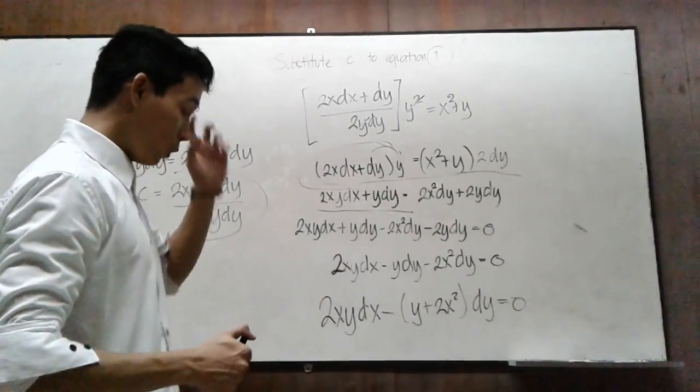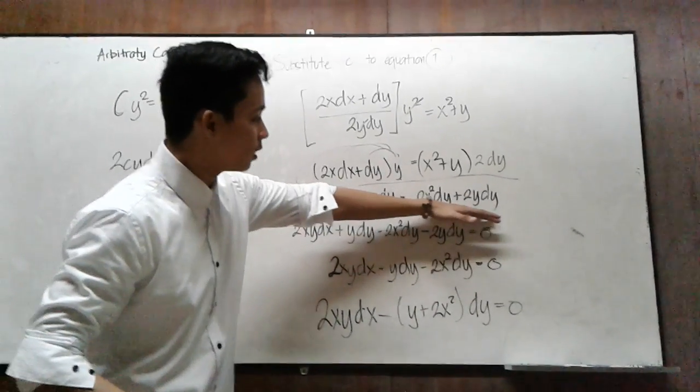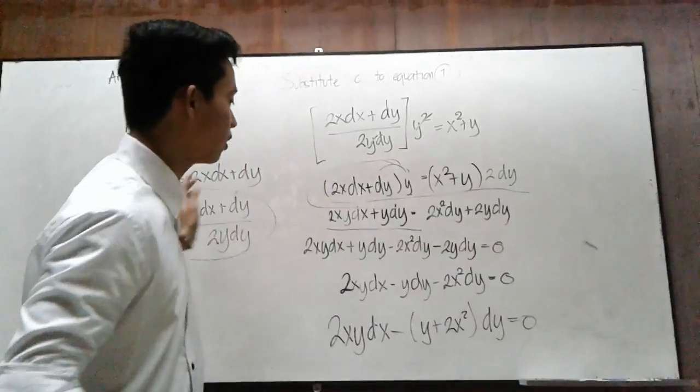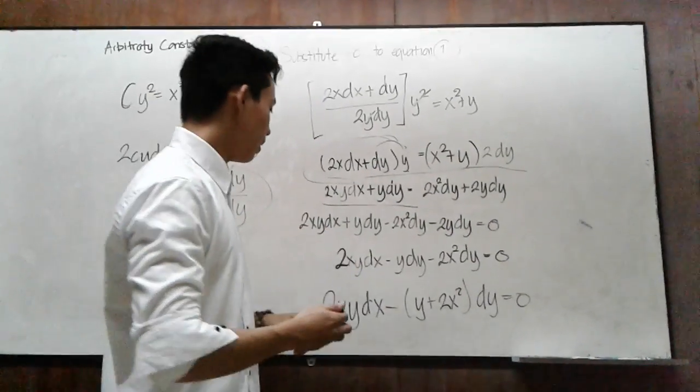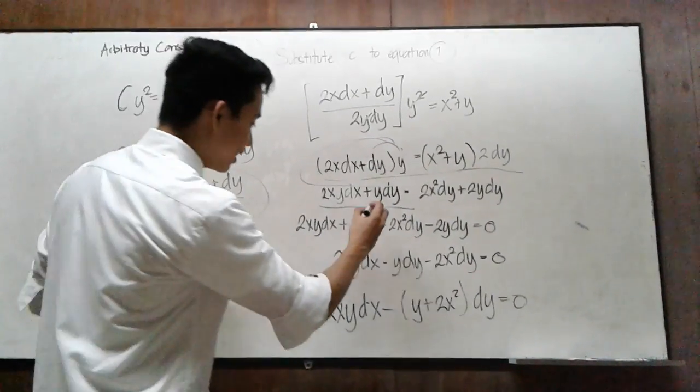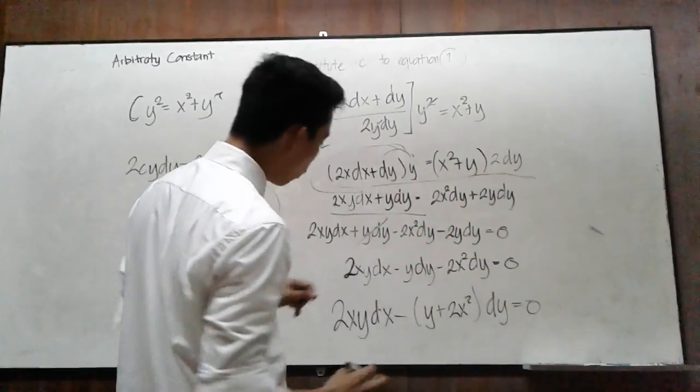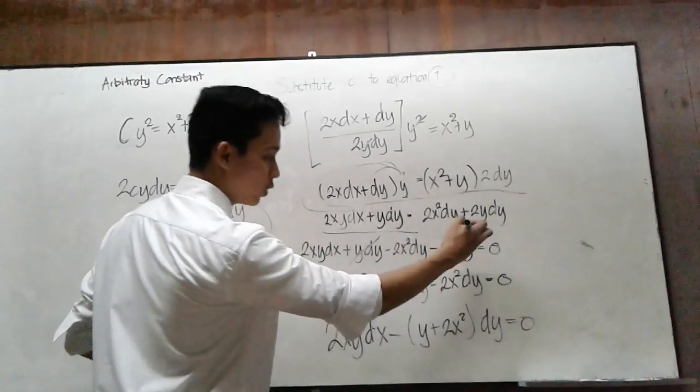To combine like terms, simply transpose all the equations to the left side. Then cancel y dy minus 2y dy.